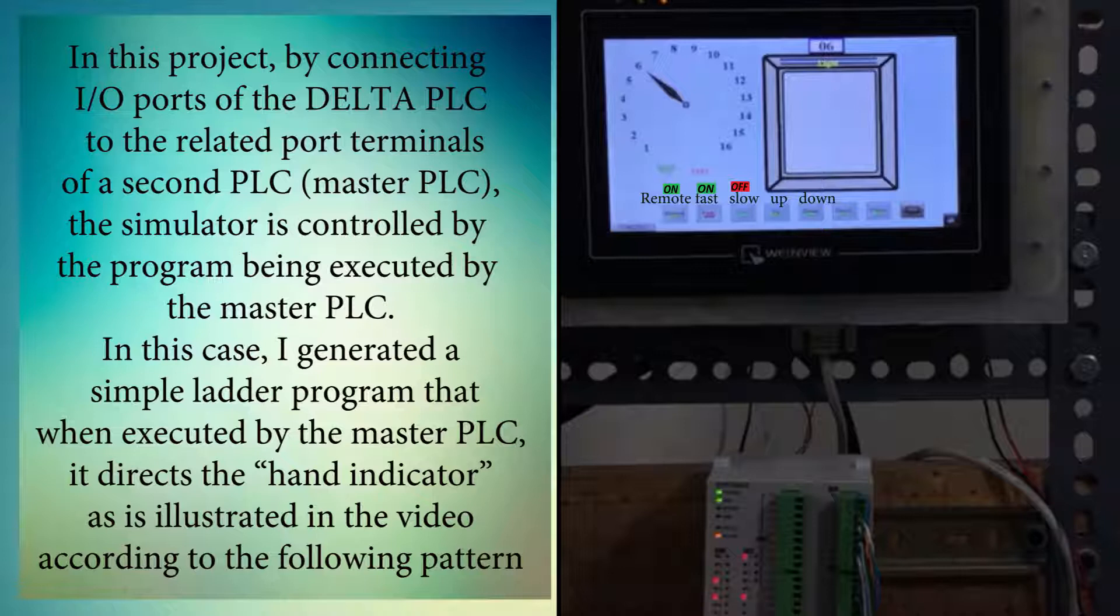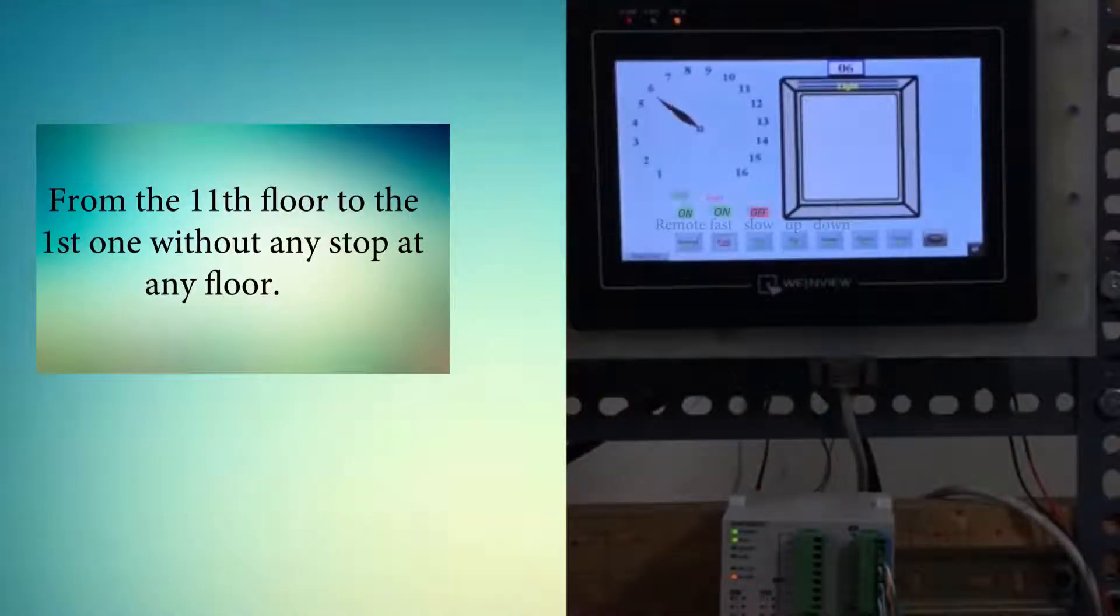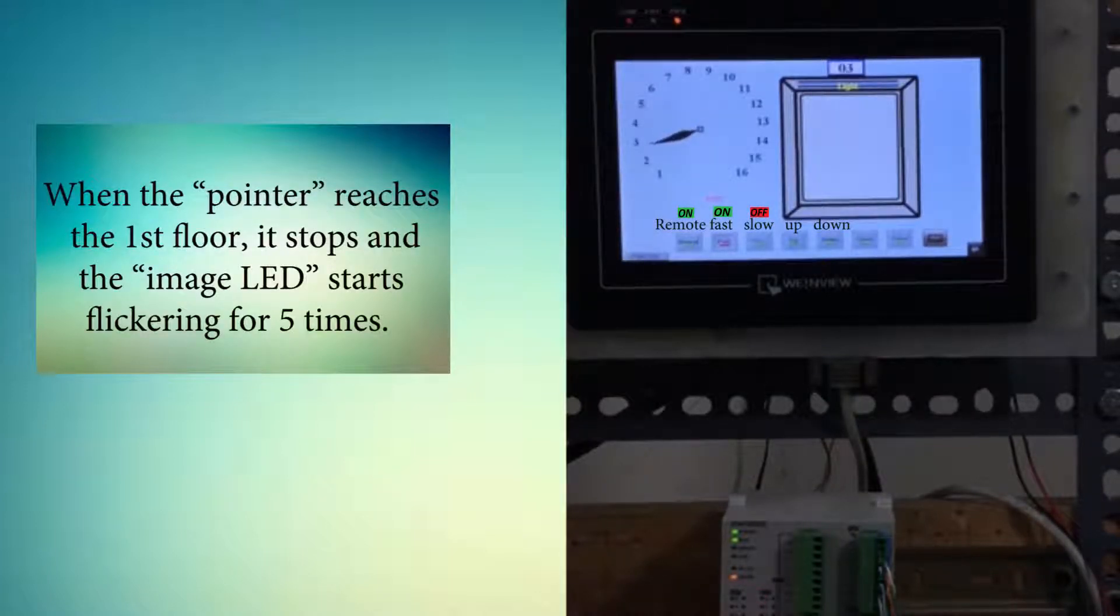It directs the hand indicator as illustrated in the video according to the following pattern: from the 11th floor to the first one without any stop at any floor. When the pointer reaches the first floor, it stops and the image LED starts flickering for five times.